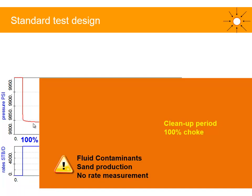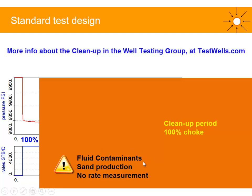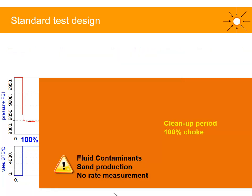Then we have the cleanup period, where we try to clean the well to maximum choke size. You need to watch out for fluid contaminants — during cleanup we will produce some contaminants such as H2O, CO2, and mud. We might have some issues with sand production, so we need to increase the drawdown by steps and there may be limits on the drawdown. In general, we won't have any rate measurement at the beginning of cleanup, as the test separator or flow meter will be on bypass, resulting in a recorded rate of zero. This does not mean the well was shut in — it means we were not measuring the rate.